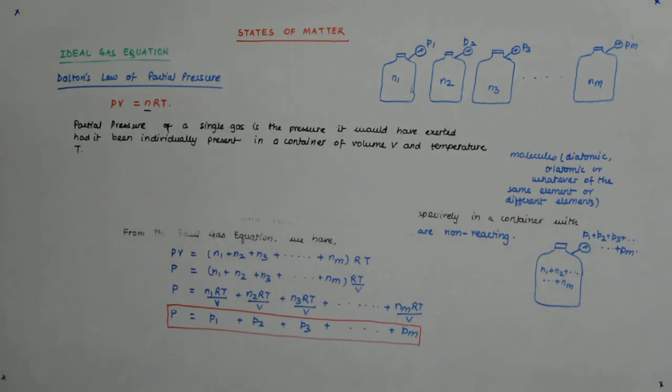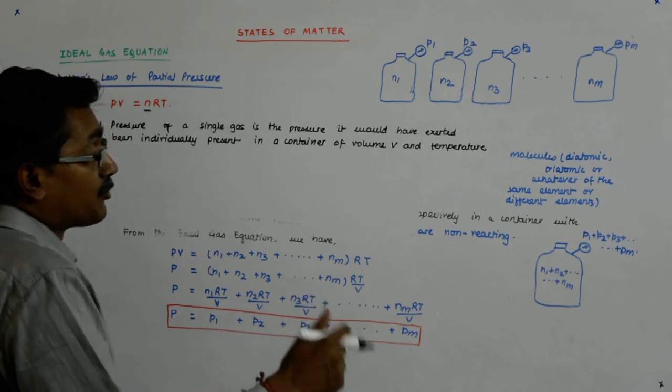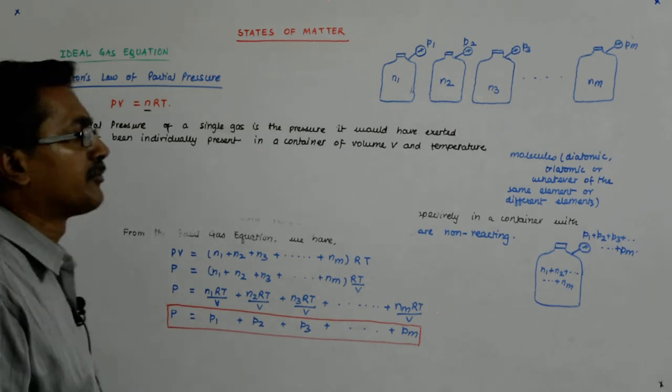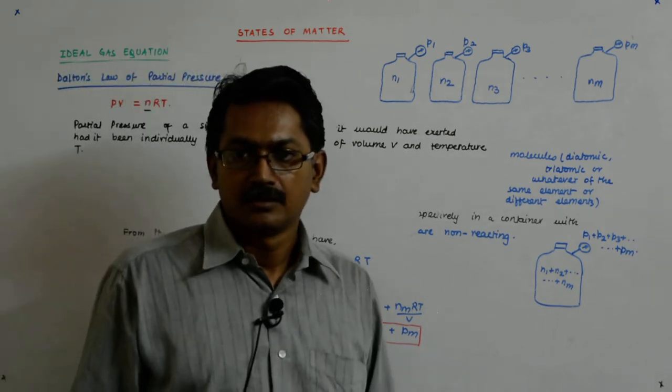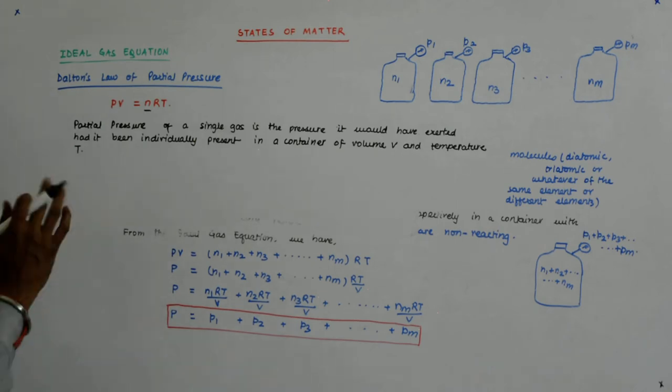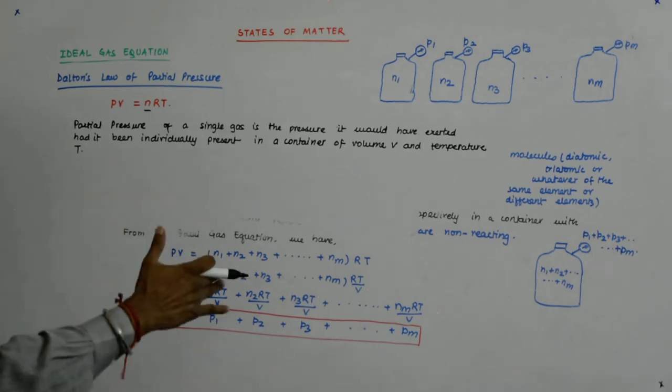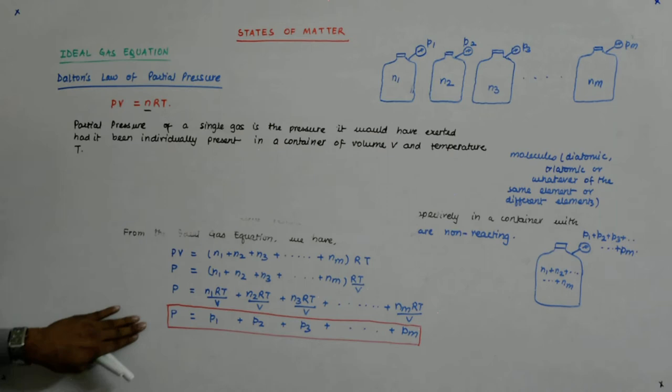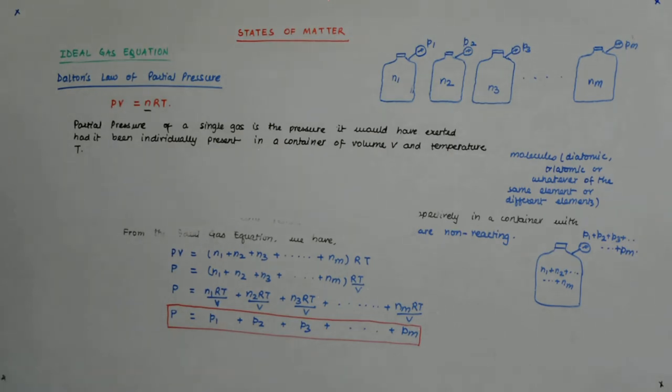So, partial pressure of a single gas is the pressure it would have exerted, had it been individually present in a container of volume V and temperature T. And if you are able to know that, then if you sum up such gases, then their total pressure that you would expect in the container of the same volume at the same temperature will be the sum of these individual pressures. Understand?